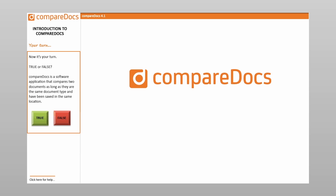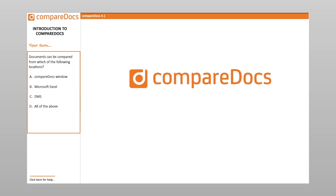True or False: CompareDocs is a software application that compares two documents, as long as they are the same document type and have been saved in the same location. Documents can be compared from which of the following locations? A. CompareDocs window, B. Microsoft Excel, C. DMS, D. All of the above. Which of the following document types can be compared? A. Word to Word, B. PDF to PDF, C. Word to PDF, D. Excel to PDF, E. All of the above.